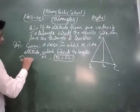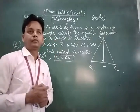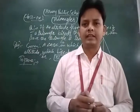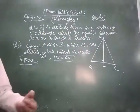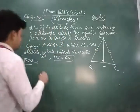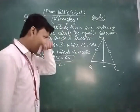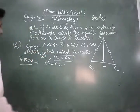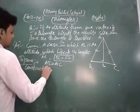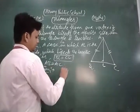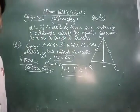Now we write 'to prove.' We have to show that the triangle is isosceles. You know that in an isosceles triangle two of its sides are equal to each other. So we have to show that AB is equal to AC. For construction, we write: AL is perpendicular to base BC.